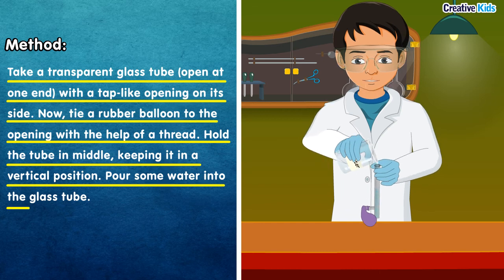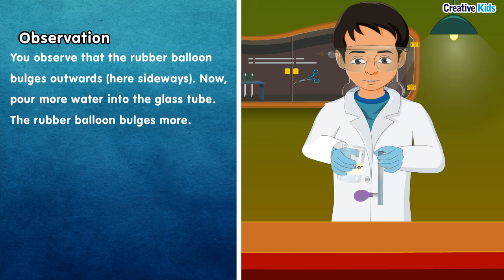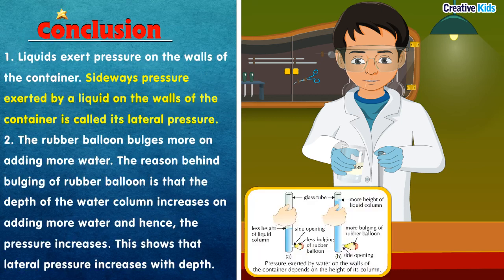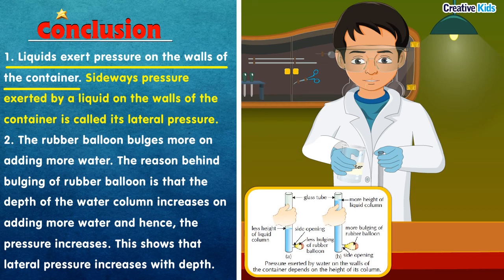Pour some water into the glass tube. Observation: the rubber balloon bulges outwards sideways. When you pour more water, the rubber balloon bulges more. Conclusion: liquids exert pressure on the wall of the container — because water acts on the walls of the container, the balloon bulges out sideways.